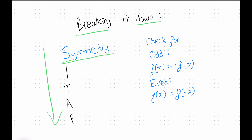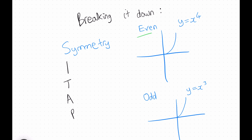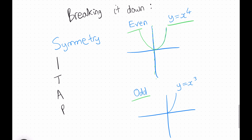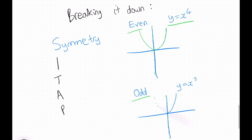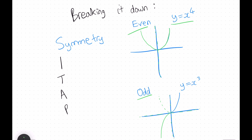Starting with S for symmetry, you want to check if the function is odd or even. You want to do this first because it will save you a lot of time when you sketch the graph. For example, here's an even function: y equals x to the 4. If you've drawn one part on the right-hand side, all you have to do is reflect it in the y-axis to get the other side. For odd functions, you reflect it twice — once in the y-axis and once in the x-axis.